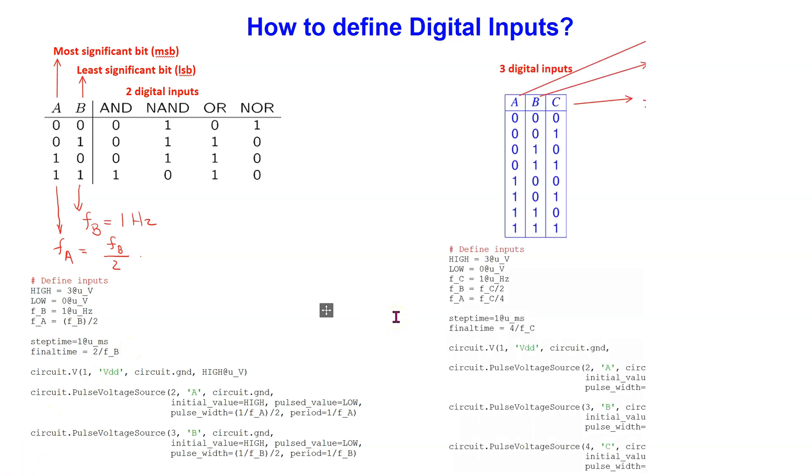This principle can be extended to three or more inputs. For instance, for three inputs, assuming a frequency of fc for the least significant bit, then input B has a frequency fc by 2 and the most significant bit A has a frequency fc by 4. Please pause the video now if you wish to study this in more detail.